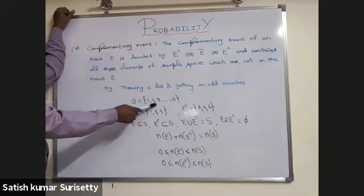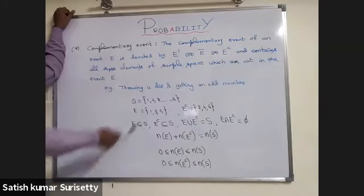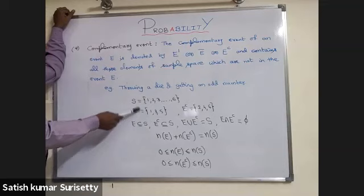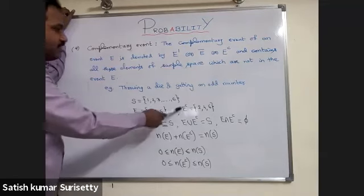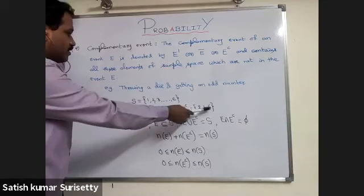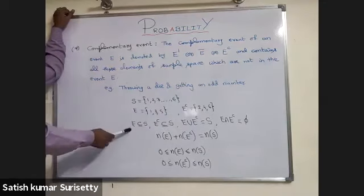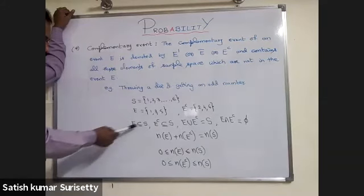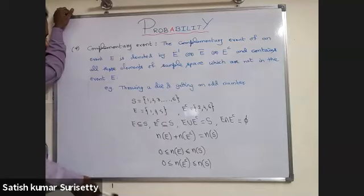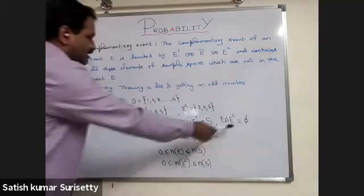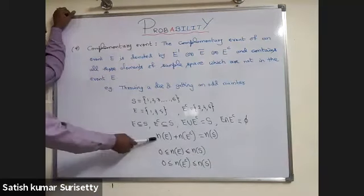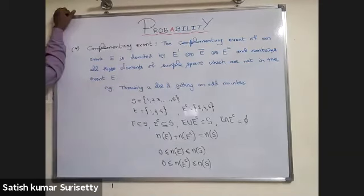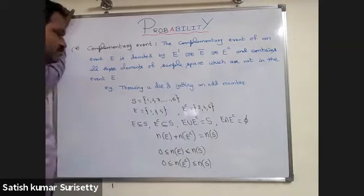The sample space contains elements {1, 2, 3, 4, 5, 6} and the event E of getting an odd number is {1, 3, 5}. The complementary event E complement is {2, 4, 6}. E is a subset of S, E complement is also a subset of S, their union is the entire sample space, their intersection is the null set, and the number of elements in E plus the number of elements in E complement equals the number of elements in the sample space S.